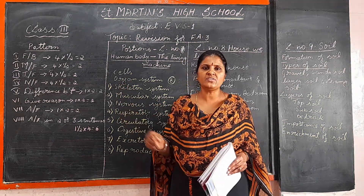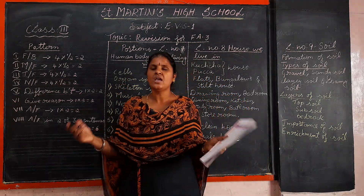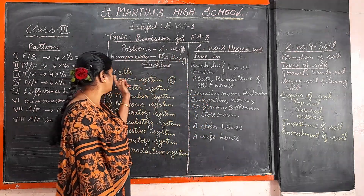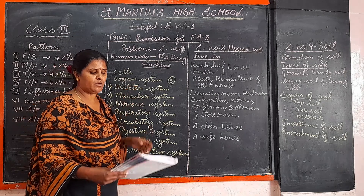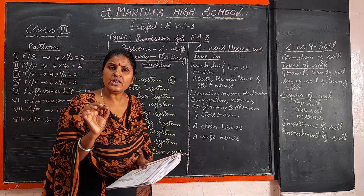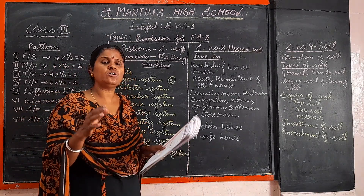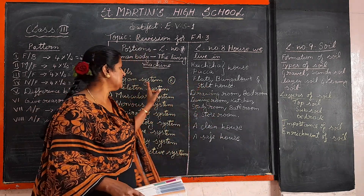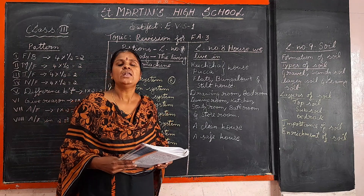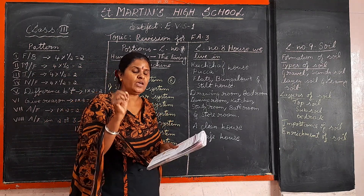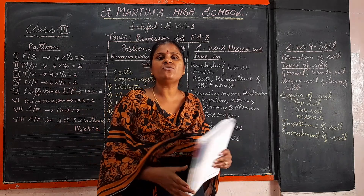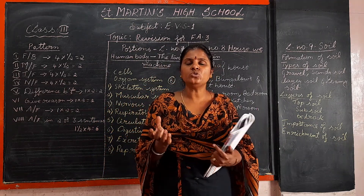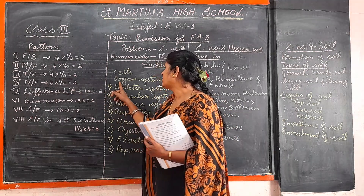In lesson 7 — Human Body: the DNA Machine — we learnt about cells. Cells are the smallest unit of the living organism. Many cells of the same kind join together to make a tissue. Many tissues join together to make an organ system. In our body, we have many organ systems.